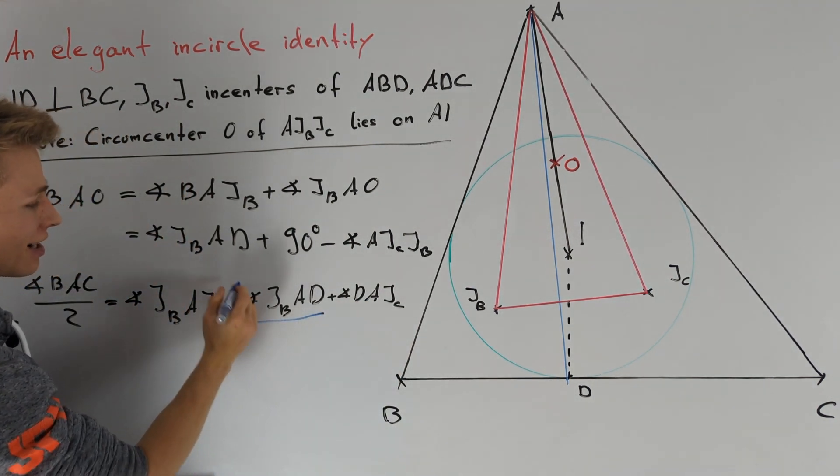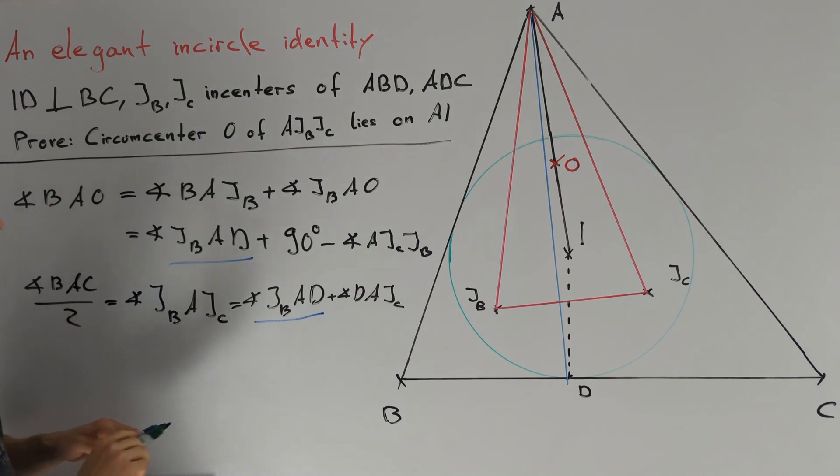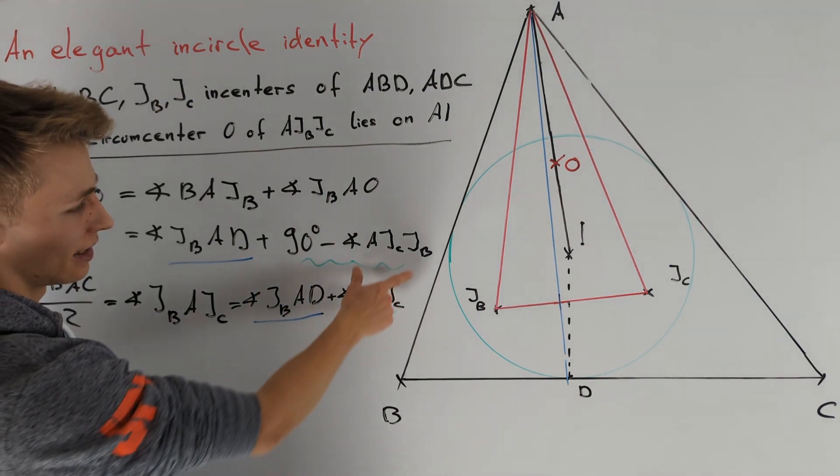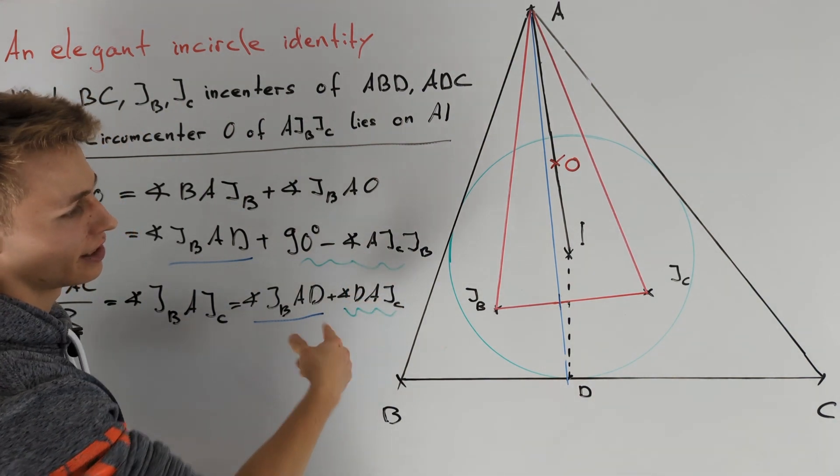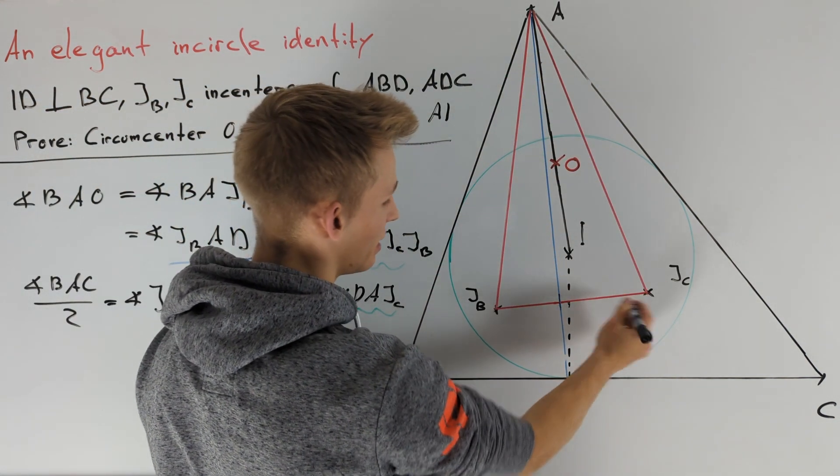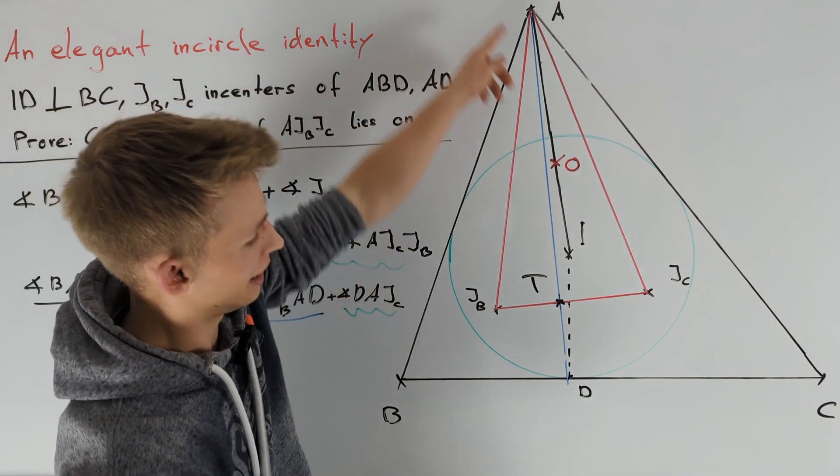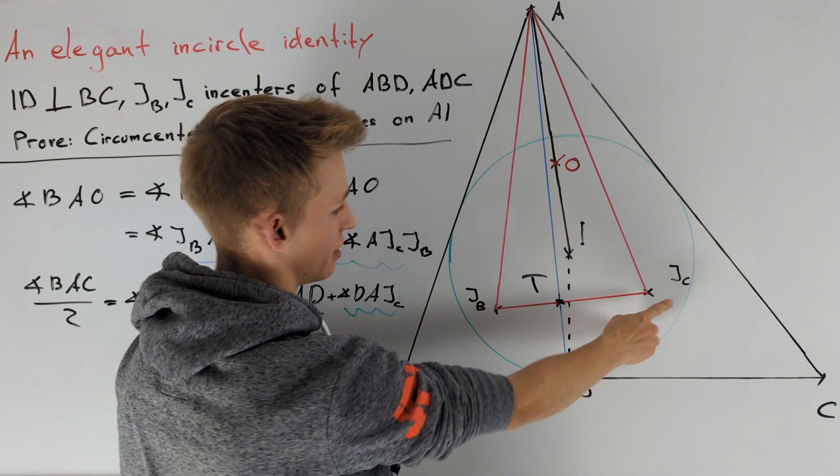Since the first two summands are equal, we want to prove the second summands are also equal. These two angles are interior angles in triangle AJCT, where T is the intersection point of AD and JBJC.